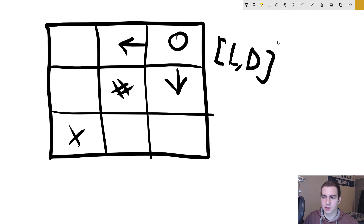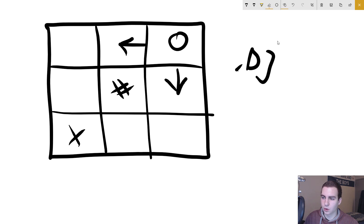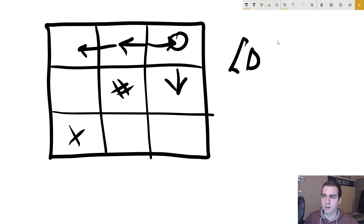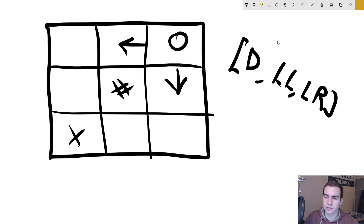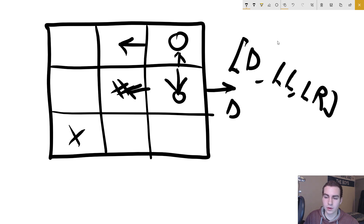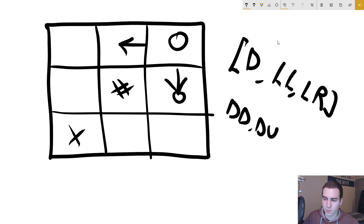We dequeue 'left' and look at valid moves from that position: we can go right or left, so we add 'LL' and 'LR' to the queue. Then we dequeue 'down' — from there we can go up or down, so we add 'DU' and 'DD'. We keep repeating this process, exploring every branch.